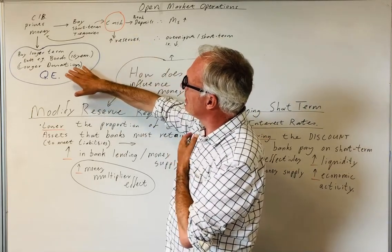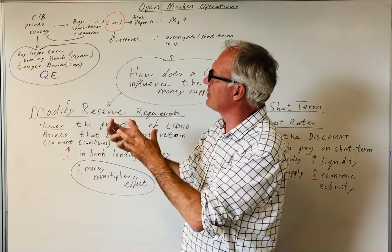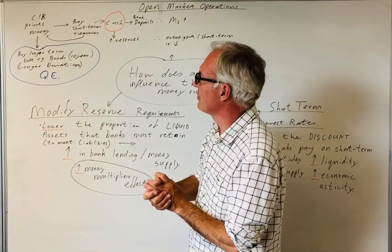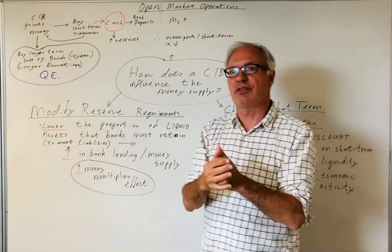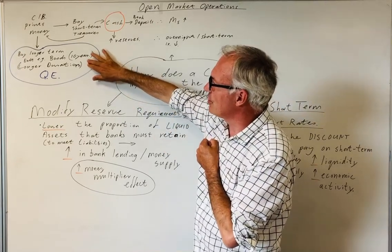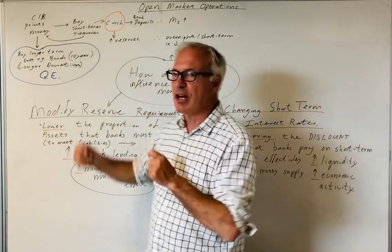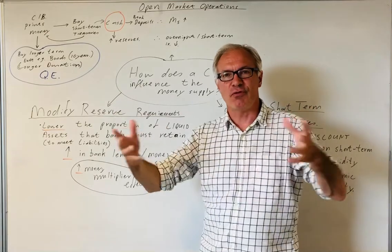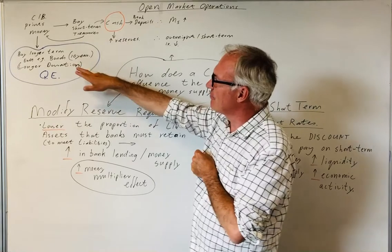It's when the central bank in this case prints money, but buys longer-term debt such as 10-year government bonds, 20-year government bonds. It even buys potentially mortgage-backed securities, and these are securities of long duration. Quantitative easing has a bigger impact and is designed to affect the overall economy in terms of boosting economic activity.